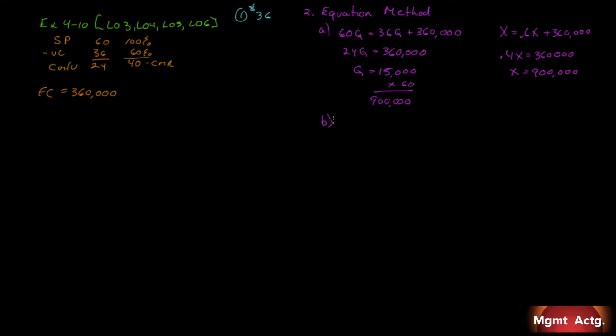B says, what sales level in units and in sales dollars is required to earn an annual profit of $90,000? Well, it's the same equation. 60Q equals 36Q plus 360. There's our break-even. But we're asked to earn a profit of $90,000, so let's add another $90,000 on. We'll still get to the same 24Q, but now it must equal 450.